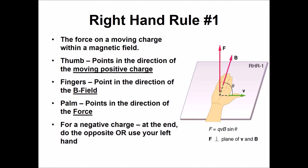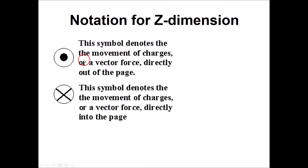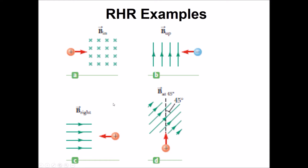We have a third dimension to consider. The x and y directions lie in the plane of the page, and the force can also come out of or into the page — that's the z direction. We use two symbols: a dot with a circle around it means the direction is out of the page, and an x (sometimes with a circle) means it's going into the page.